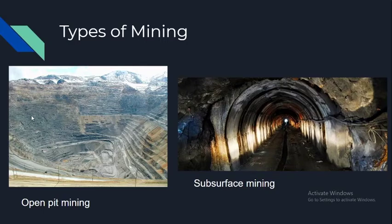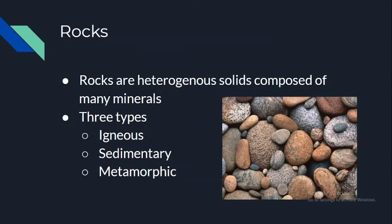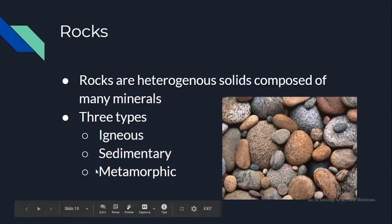Today we started talking about rocks. Rocks are made of many different minerals, which is why when you pick up a rock you can see all kinds of different colors, speckled patterns, and different textures — those are all the different minerals it's composed of. There are three types of rocks: igneous, sedimentary, and metamorphic.